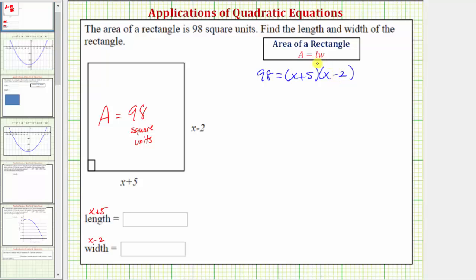Now our goal here is to solve this for x, so for the first step we'll clear the parentheses by multiplying. When multiplying two binomials we always have four products, one, two, three, four. So we have 98 equals x squared minus 2x plus 5x minus 10.